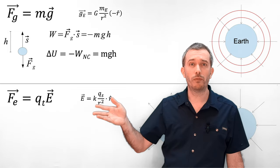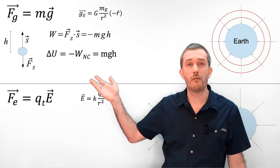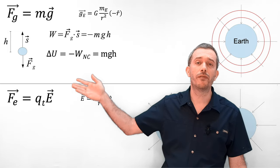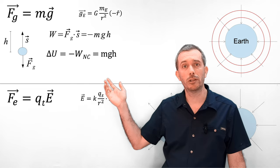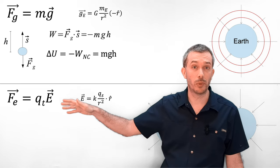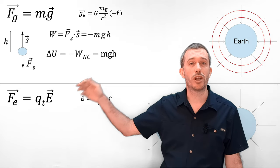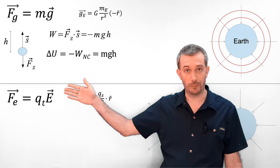From now on, when we calculate conservation of energy, we can leave the work done by gravity out and instead use the simpler change in potential energy.